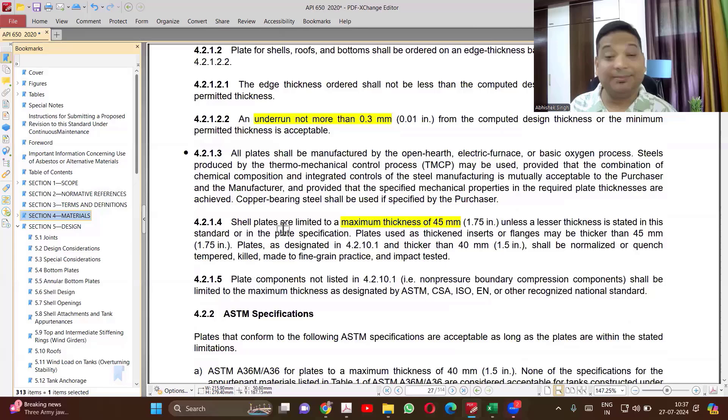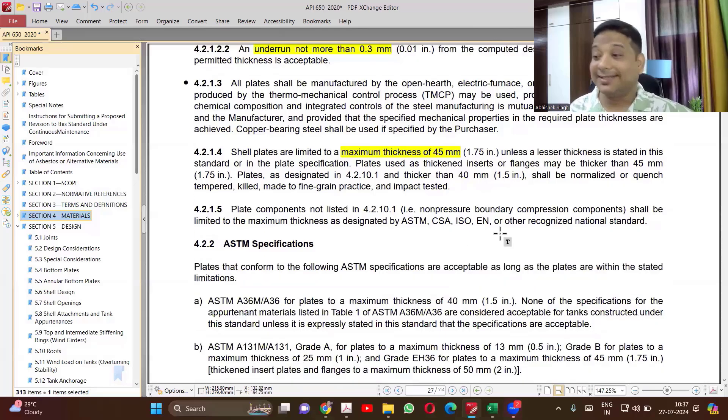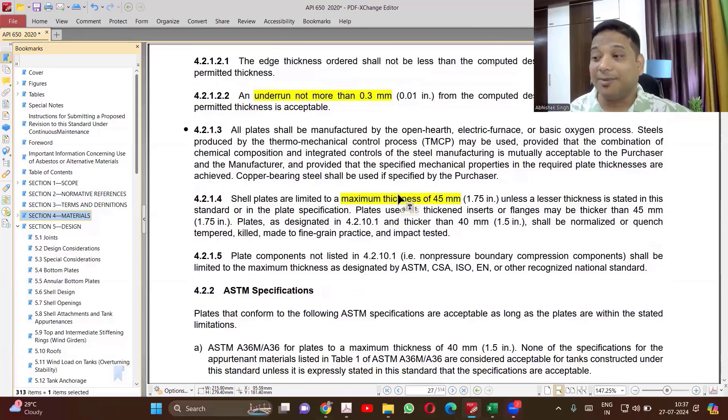Now this is very important. In ASME, there is no limit of the higher thickness. We can use whatever is possible to make. Here, a big limitation. Shell plates are limited to maximum thickness of 45mm. You cannot use more than 45 mm thickness. The thickness cannot be higher than 45 mm. Now for different material, it's different. So this limit is not common for all of them.